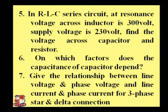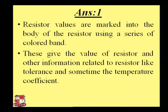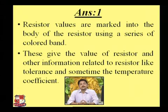Now solving question one: the color code of the resistor. Resistor values are marked into the body of the resistor using a series of color bands. Whatever resistors you see, they are marked with certain colors. These colors give the value of the resistor and other information like tolerance and sometimes the temperature coefficient. So there is no need to measure the value with a multimeter — you can measure it using the color code technique.